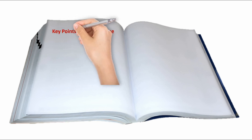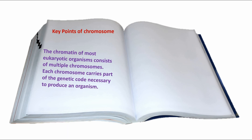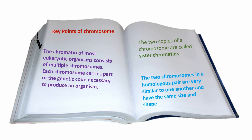Key points of chromosomes: The chromatin of most eukaryotic organisms consists of multiple chromosomes. Each chromosome carries part of the genetic code necessary to produce an organism. The two copies of a chromosome are called sister chromatids. The two chromosomes in a homologous pair are very similar to one another and have the same size and shape.